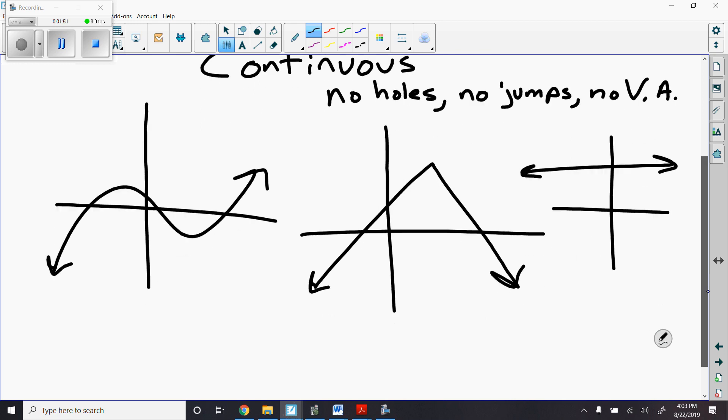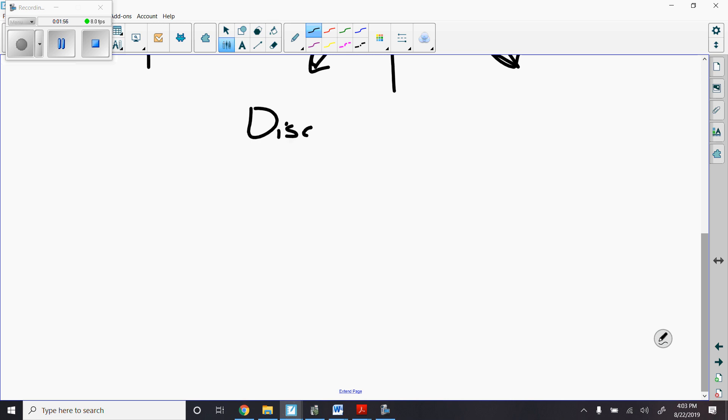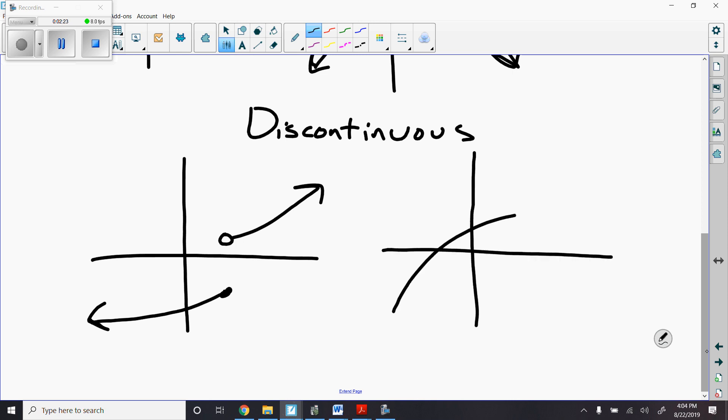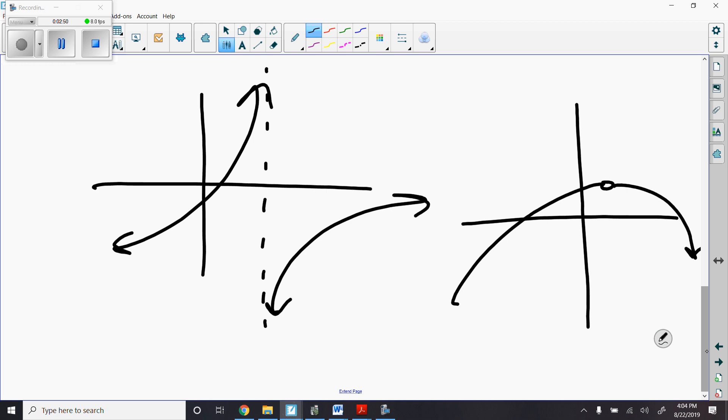Here are some graphs that have discontinuities in them. So, here's a couple of graphs that are discontinuous or have some discontinuities. Because of that jump right there, we've got a discontinuity. Here's another one. That graph is discontinuous. Here's another one. That graph is discontinuous. Here's one more example.